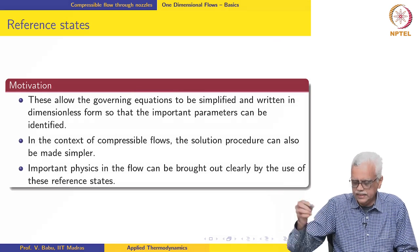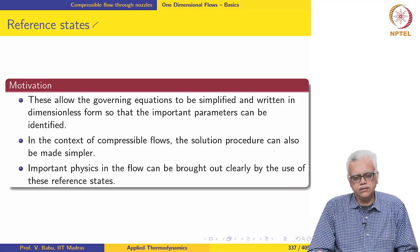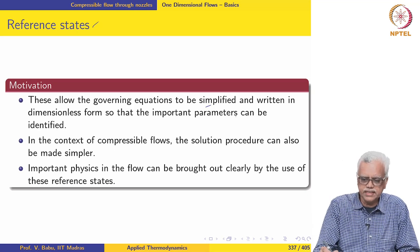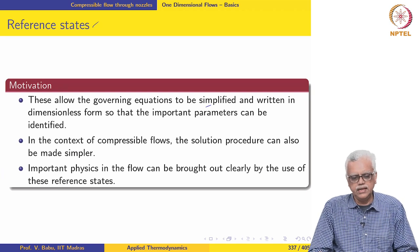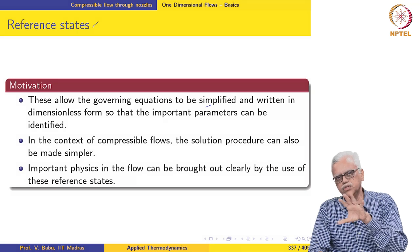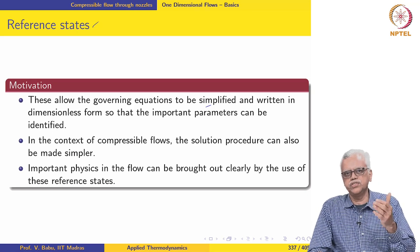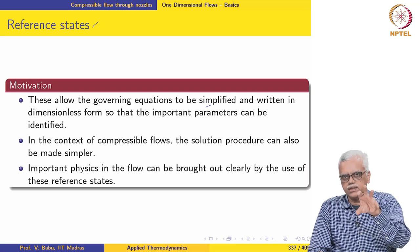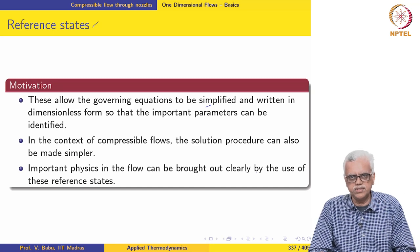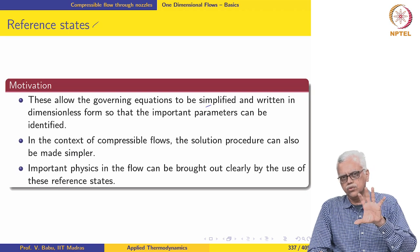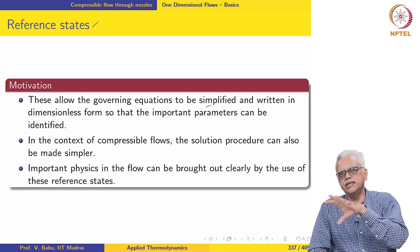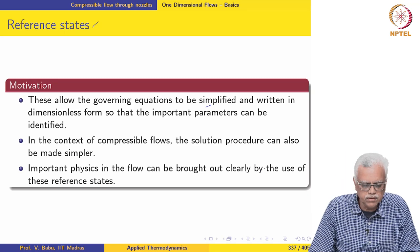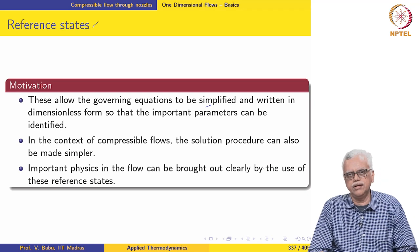In gas dynamics, a few reference states are customarily used. Reference states allow the governing equations to be simplified and written in a dimensionless form so that important parameters can be identified. Many expressions we will derive are written in terms of Mach number, showing that Mach number is the controlling parameter, and the equations can be made dimensionless. This also allows quantities to be tabulated as a function of Mach number, and we will use these tables later for calorically perfect gases.